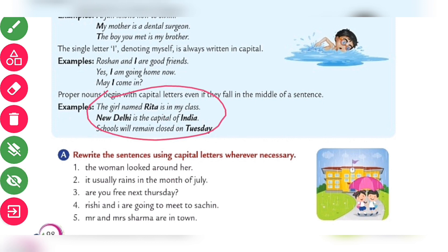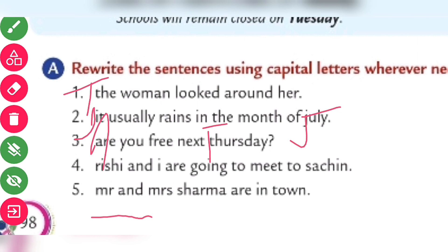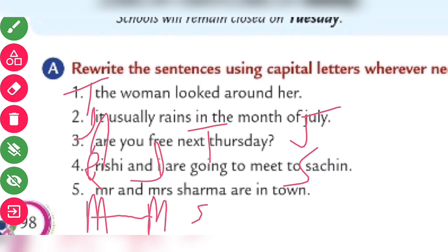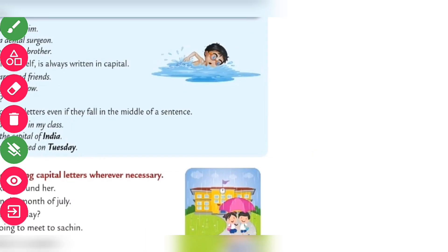Now the exercise: read the following sentences using capital letter where necessary. The woman looked around — capitalize I. In the month of July — J capital. Are you — A capital. Thursday — T capital. Rishi and I — R capital, I capital. Going to meet Sachin — S capital. Mr. and Mrs. Sharma — M capital, S capital. These are the answers of the exercise.